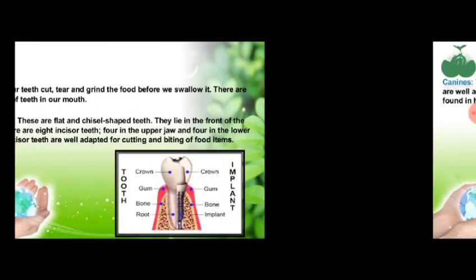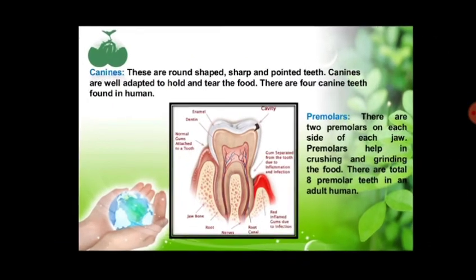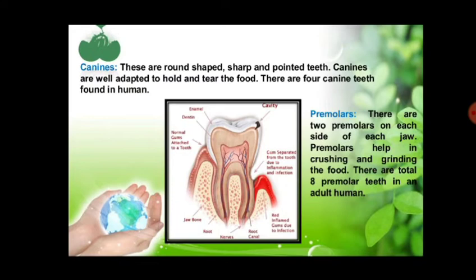Then we are having canines. These are round-shaped, sharp, and pointed teeth. Since they are pointed and sharp, they are used for the tearing of the food. They are well adapted to hold and tear the food. We are having 4 canine teeth in humans.